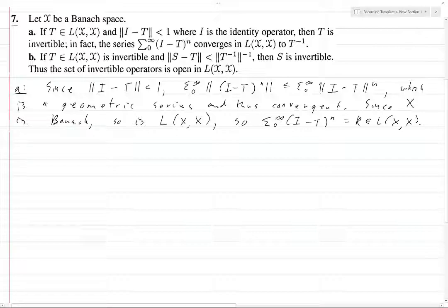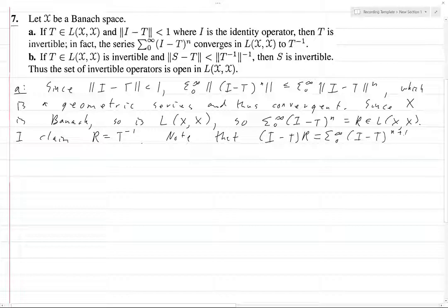What do we want to prove? We want to prove that this converges to T inverse, so I claim R is T inverse. Note that, let's just figure out what (I minus T) of R is. This is the sum from 0 to infinity of (I minus T) to the n plus 1, because that extra I minus T can just be factored into each of the components. And that's equal to, you take the R, the original thing, but remember R had this 0 term.